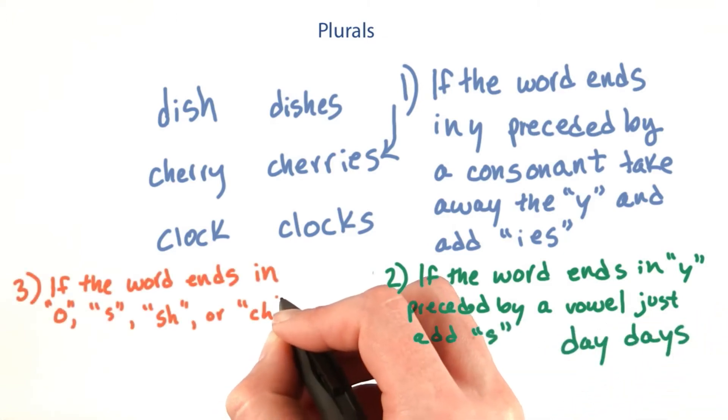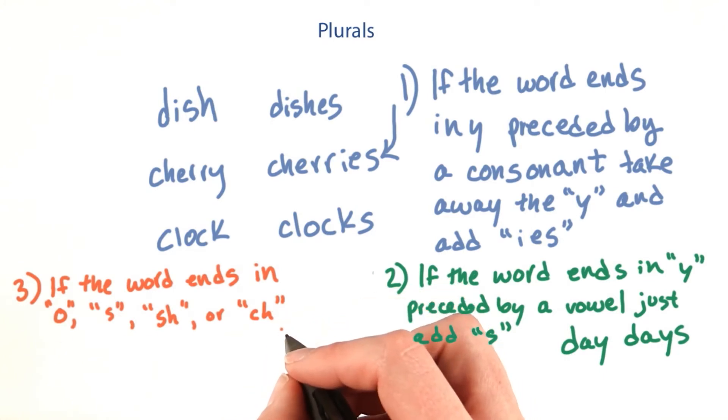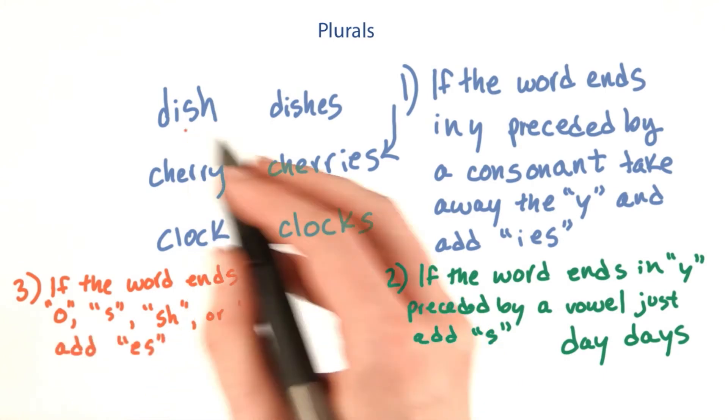If the word ends in O, S, SH, or CH, add ES, like in dishes.